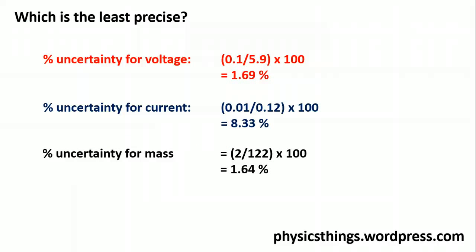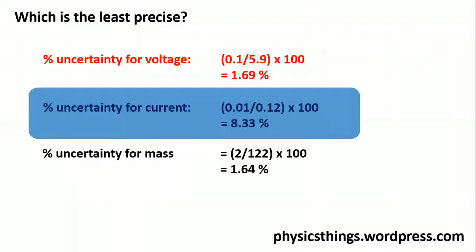So, if we compare the three that we've looked at in this exercise, my percentage uncertainty for voltage was 1.69%, for current, was 8.33%, and for mass, 1.64%. So, comparing them, the uncertainty for the current out of all those three is by far the least reliable. It has the greatest uncertainty.